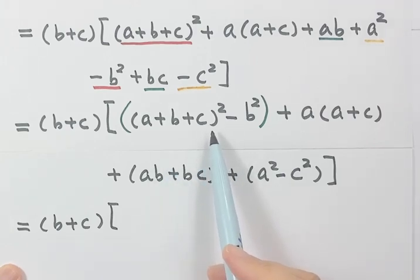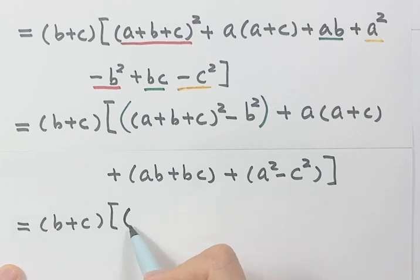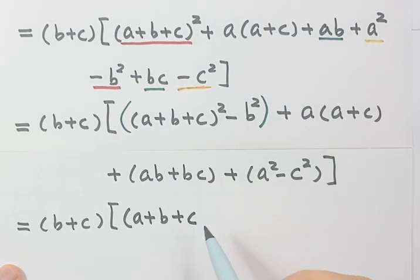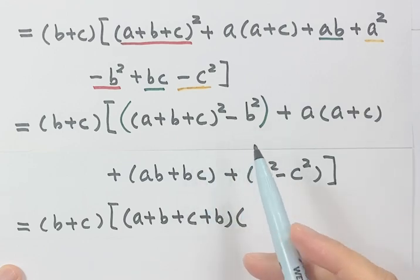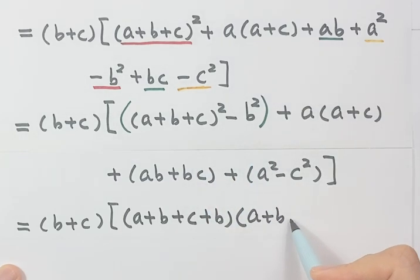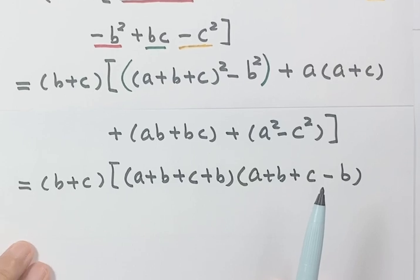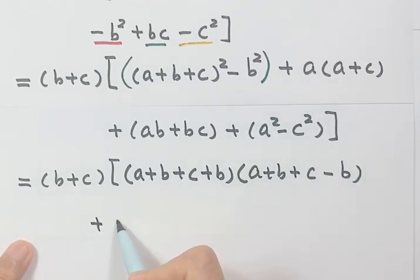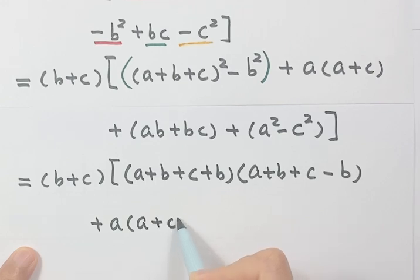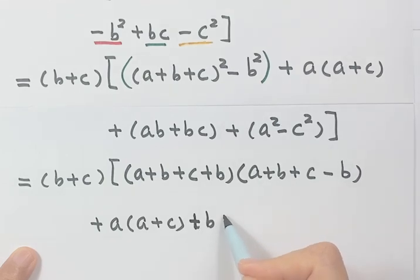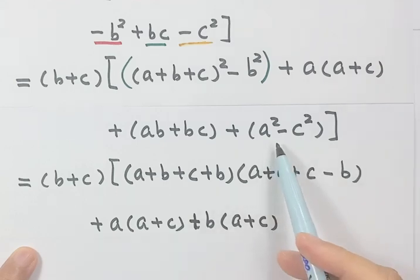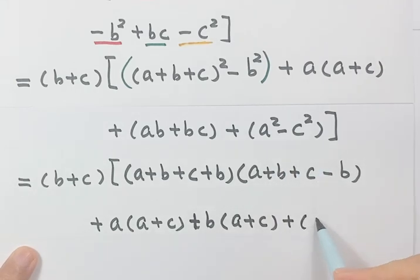So first let's use the difference of squares formula. So then here we have just a plus b plus c, then plus b, times a plus b plus c minus b. Then just a plus b plus c minus b. So we're done with this one. Now write down a times a plus c. Here we have common factor b — take out the b. Then we have a plus c here, and this one is a formula, so we have a plus c, then a minus c.